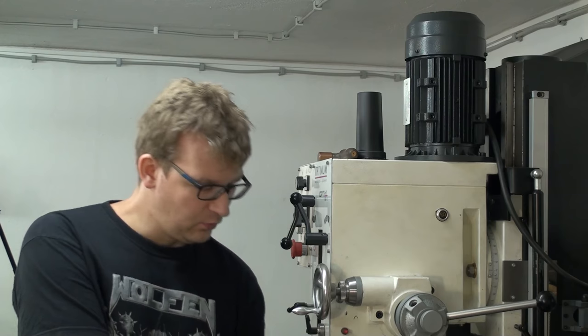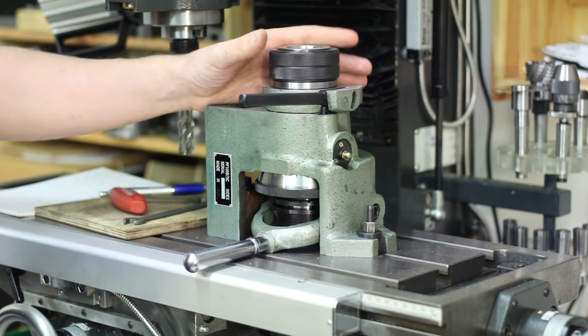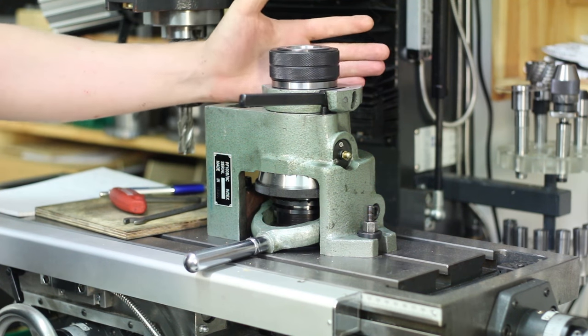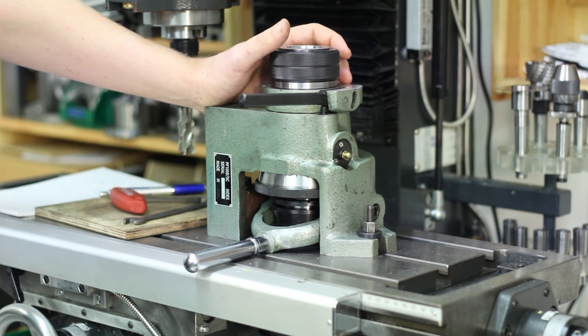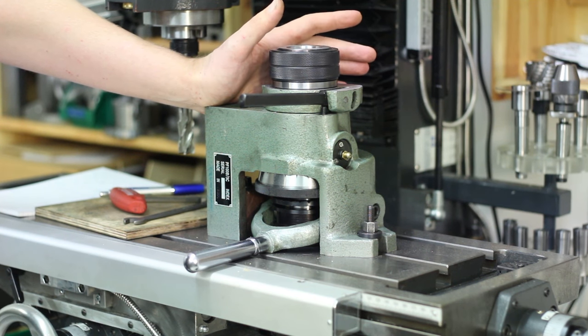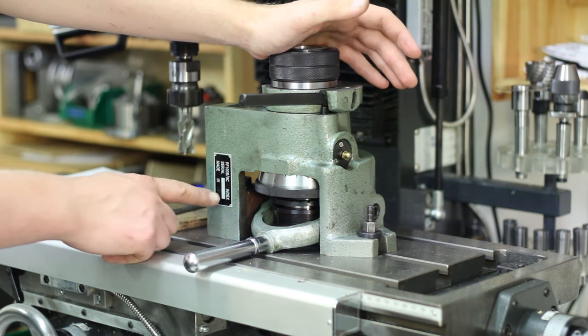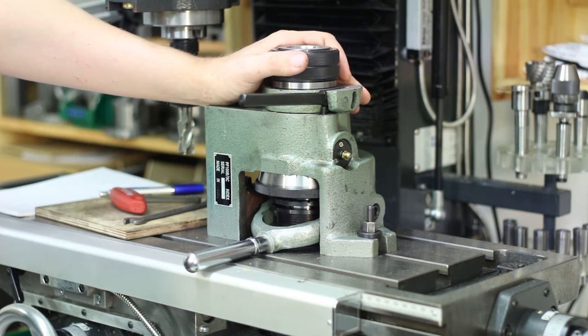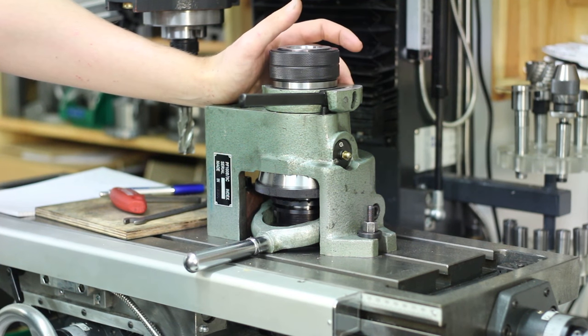This time we have a 5C horizontal vertical indexer. This thing still gets sold by Hardinge. Costs about 10,000 bucks. This one comes directly from China. I bought it from Chronos in the UK.